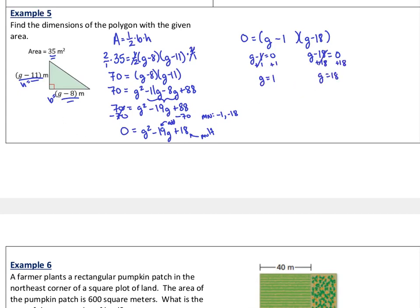If I try to substitute in 1 into the base, I would have 1 minus 8, which is negative 7. I can't grab a tape measure and measure out negative 7 meters. That just doesn't work. So this answer is not acceptable. Let's do 18 minus 8, that gives me 10. And then for my height, 18 minus 11 gives me 7. So I know that 7 and 10 represent the dimensions of that triangle. Those are the base and height measurements we were looking for.